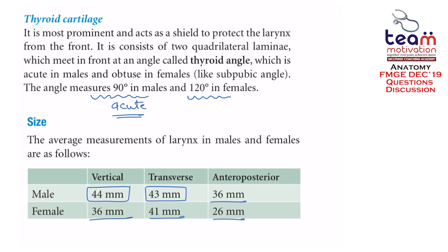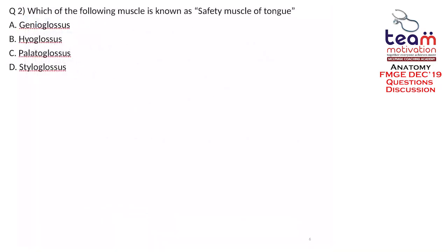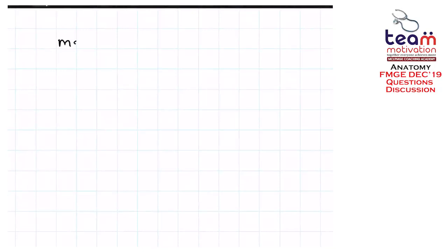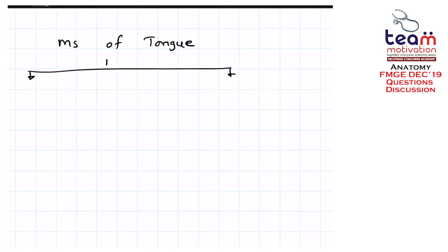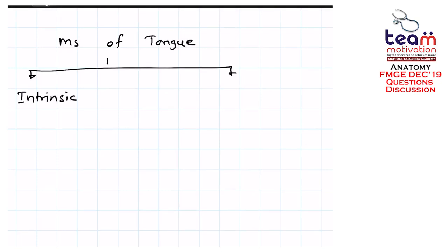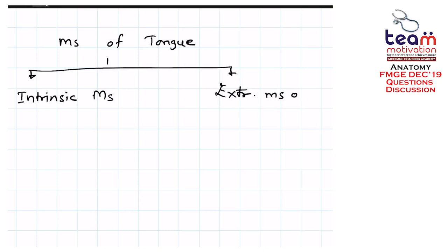This question has been recently asked, so study the larynx topic thoroughly. The next question is: which muscle is known as the safety muscle of the tongue? Options are genioglossus, hyoglossus, palatoglossus, and styloglossus. The muscles of the tongue are of two types: intrinsic muscles, which are totally restricted within the tongue tissue, and extrinsic muscles, which originate outside the tongue and insert within it.